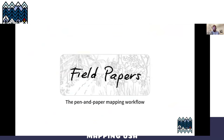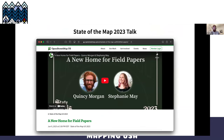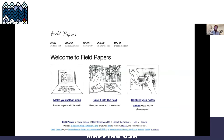The first one I want to talk about today is Field Papers. We did a talk on this at State of the Map US, myself and Stephanie May. We transferred Field Papers from Stamen to OpenStreetMap US, so we're really excited to have it. You can go to fieldpapers.org and make an atlas that you can print out and use to map in the field.